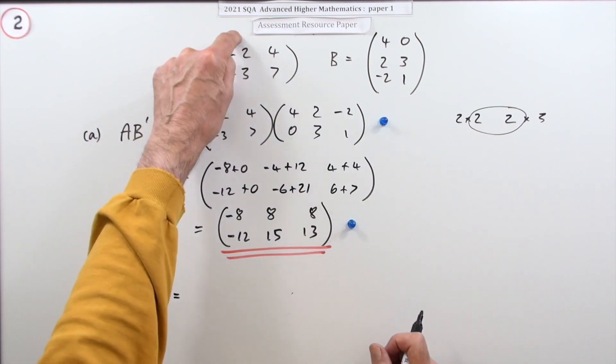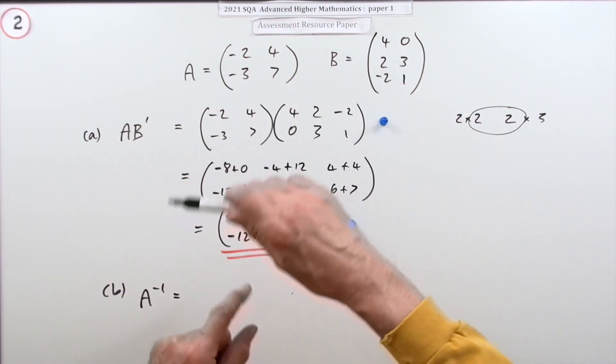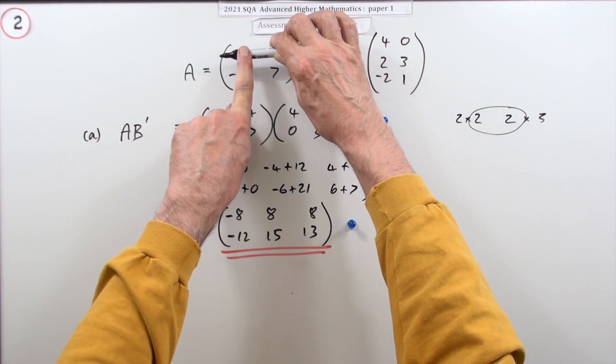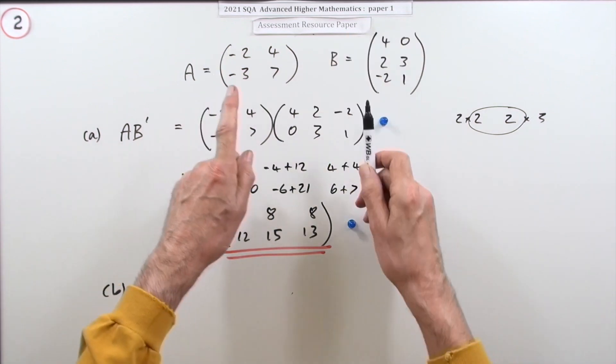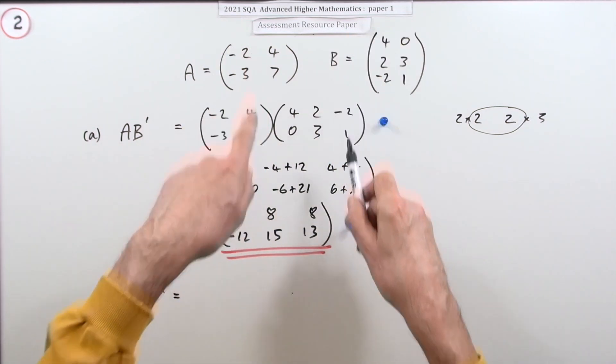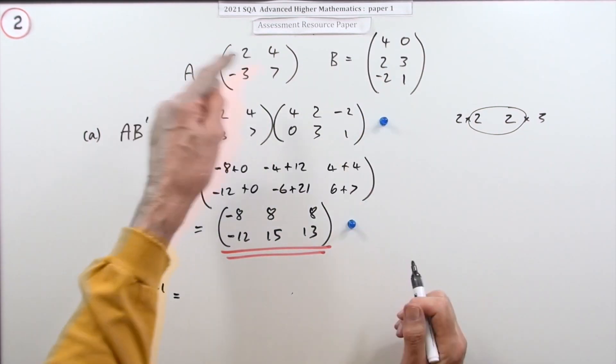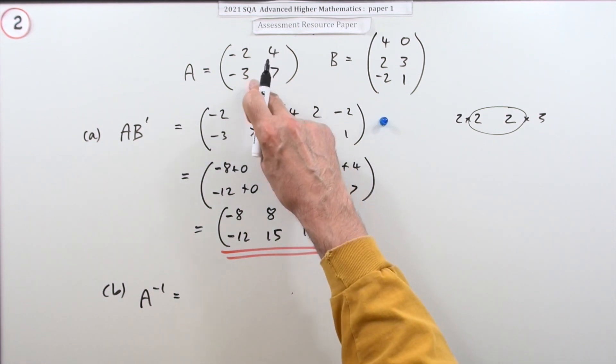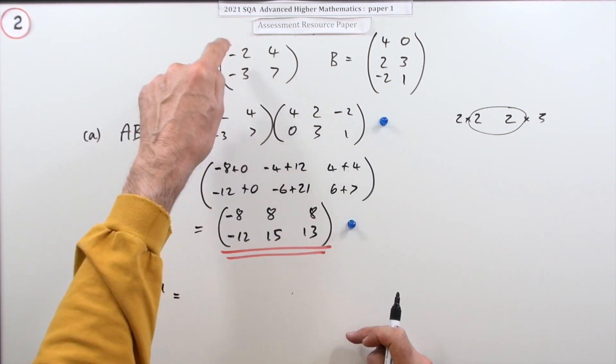You then have to replace every single element by its cofactor. Now the cofactor is, if you knock out the row and column, it's whatever's left in the matrix—the determinant of that sub-matrix with a sign allocated to it according to the position. Then you have to divide the whole thing by the determinant of the matrix. In the case of a 2x2, their cofactors will just be the opposite one with the appropriate sign.